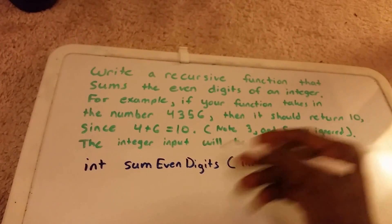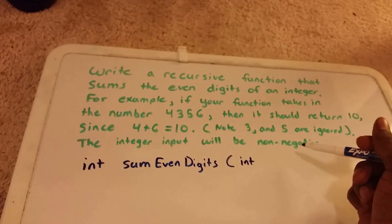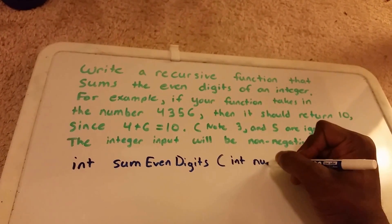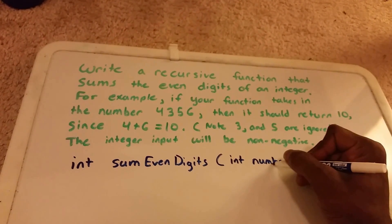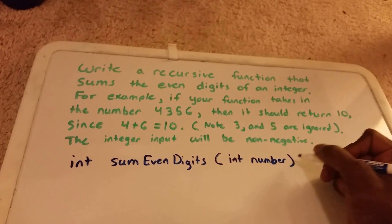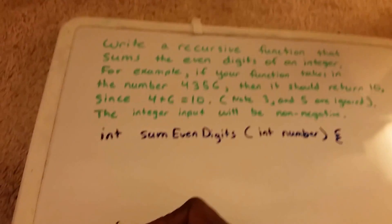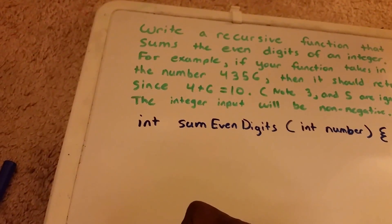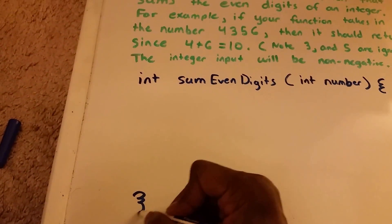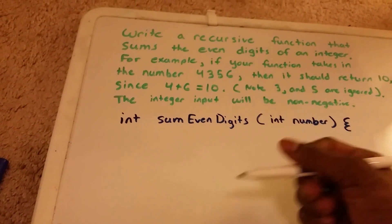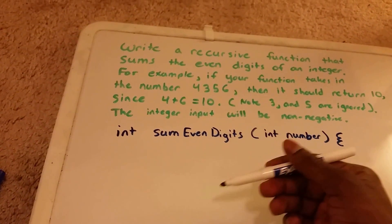We're going to take in a non-negative integer, so I'm going to call that non-negative integer number. I have my open brackets and my closed brackets down here. Now we've got to do some stuff in here, some recursive logic.